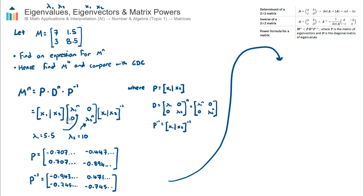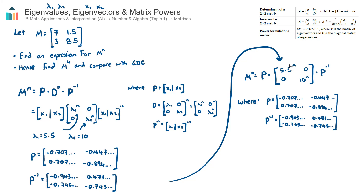We now have all the information needed to find the expression for M in terms of n. We have the P matrix of eigenvectors, the inverse of P, and the two eigenvalues. Rewriting the formula with all values substituted in — I didn't have enough room to include P and its inverse explicitly — but the eigenvalues are substituted in. This expression is now valid for any given power of M: whether power 3, power 10, I can simply substitute that power into the eigenvalues and get the result.